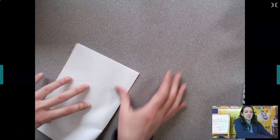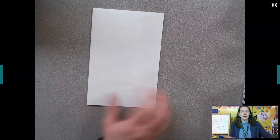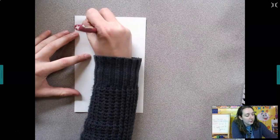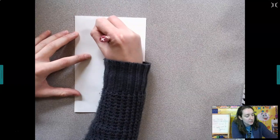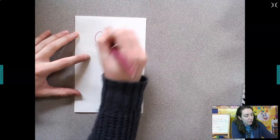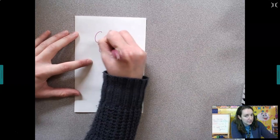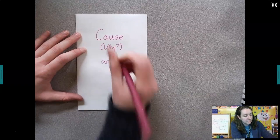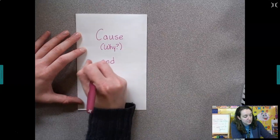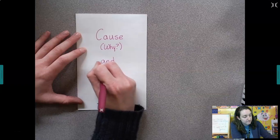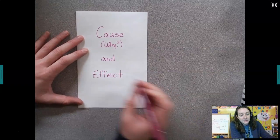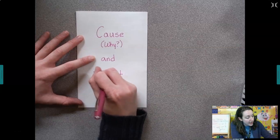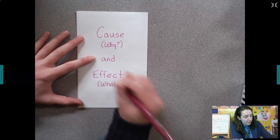So we're just going to fold it in half and make a little book. For our cover, we're going to put cause, and then in parentheses, we're going to put the why. So why something happened, and effect. And effect is going to be what, what happened?